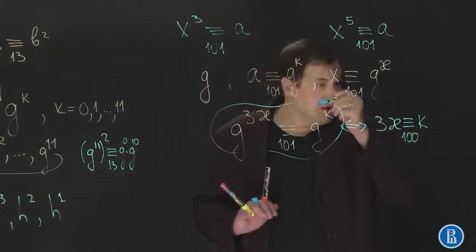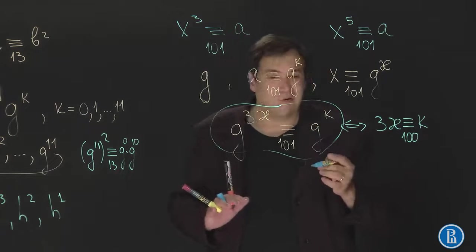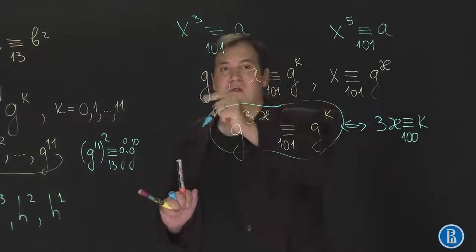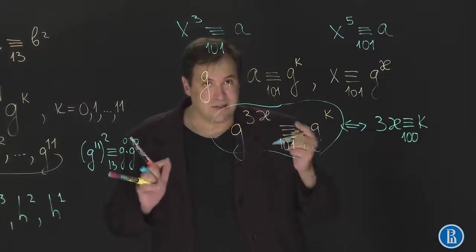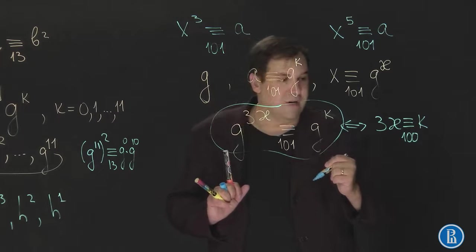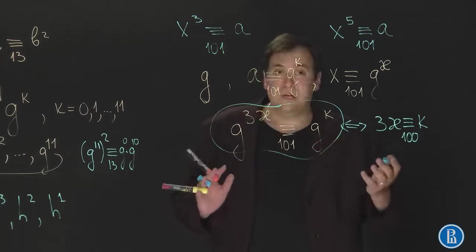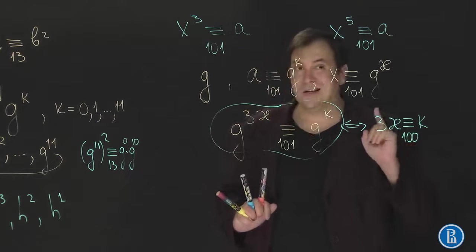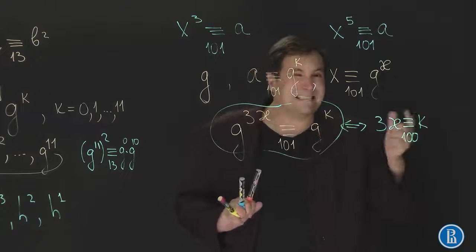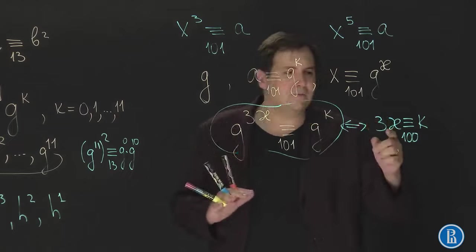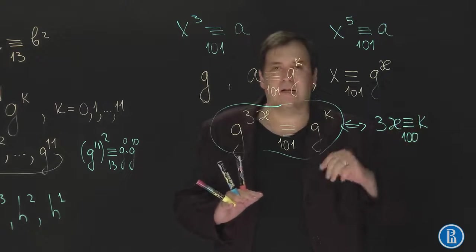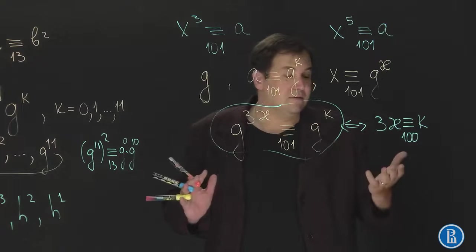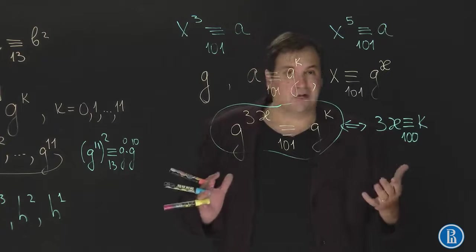But this equation here is equivalent to 3 kappa being congruent to k modulo 100. Why 100? Because 100 is Euler's function of 101. Because 100 is the order of the primitive root modulo 101. This is the main cause. So all you need is the number of remainders modulo 100 such that there exists some other remainder kappa that this equality holds.